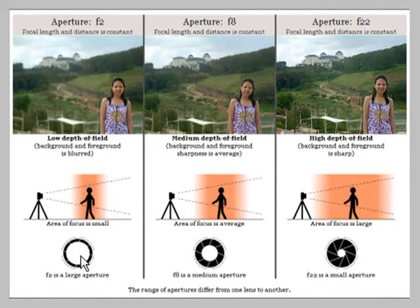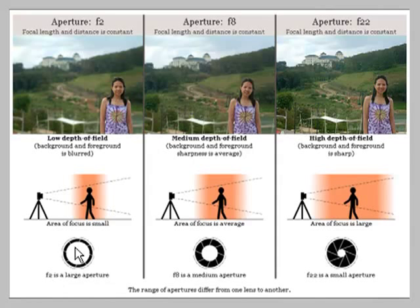On the left, the aperture has been opened up to its largest possible hole. Each aperture size is given a number, or an F number. This particular number is F2, whereas on the opposite end of the scale this is F22. Basically, the lower the F number, the larger the hole in the lens — and the opposite is true: the higher the F number, the smaller the hole.